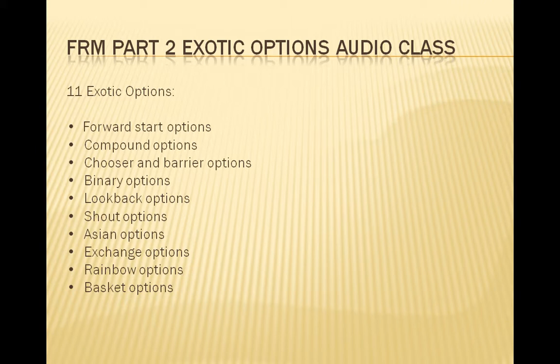A compound option is an option on an option, and there are four types: a call on a call, a call on a put, a put on a call, and a put on a put. A compound option has two levels of underlying that determine its value and consists of two strike prices and two exercise dates. The first strike price and exercise date are used to evaluate whether to exercise the first option to receive the second option. For example, a call on a call would be exercised only if the price of the underlying for the second call option were greater than the strike price of the initial option.